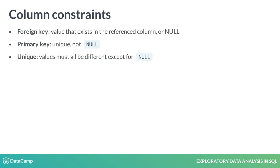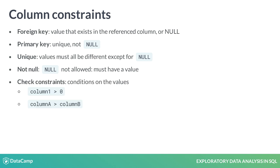Unique means that each value except null must be different from the values in all other rows. Not null means what it says — the column cannot contain null values. Check constraints are a way of implementing additional conditions on the values of a column, such as requiring the column only contain positive values or ensuring that the value of one column is greater than the value of another column.